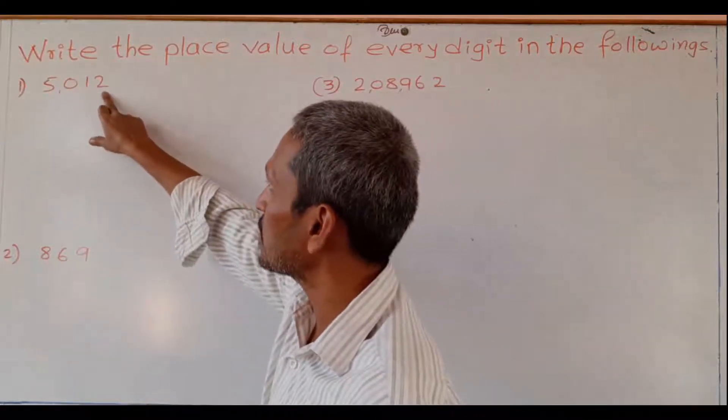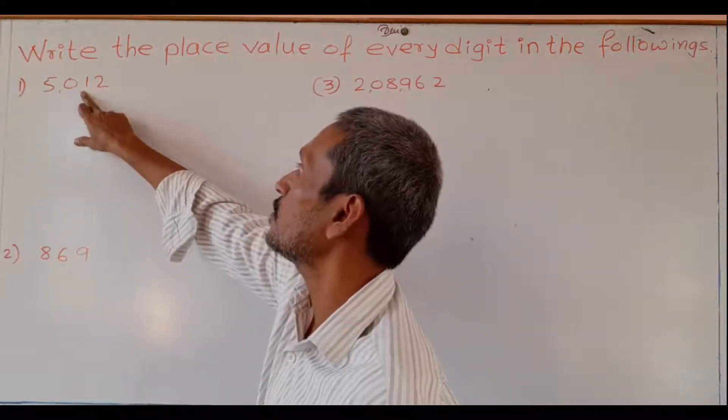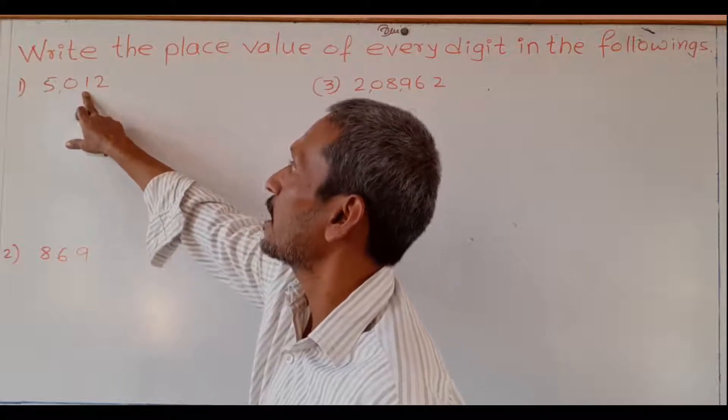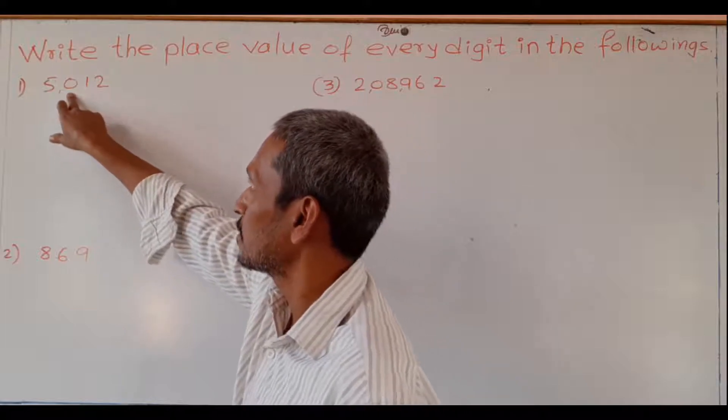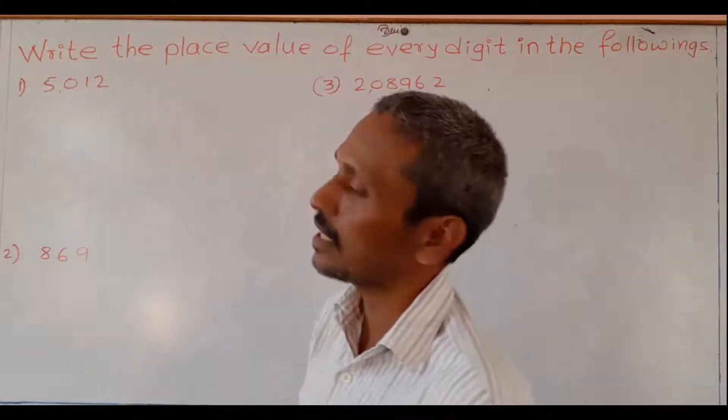The place value of 2 is 2, place value of 1 is 10, place value of 0 is 0, and place value of 5 is 5000.